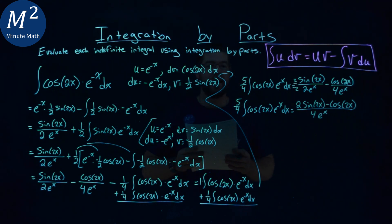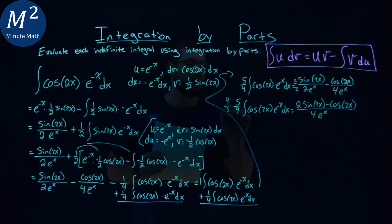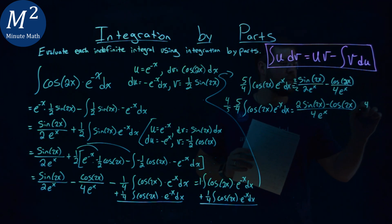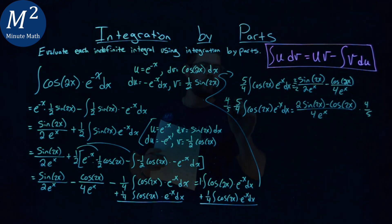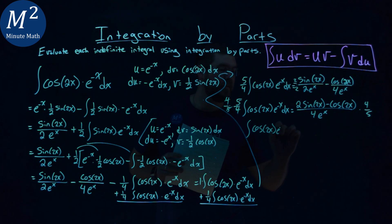But I want to get this original integral by itself. So, just multiplying both sides by four-fifths to both sides. And that's why I combined them to be one fraction at this point. So the 4's cancel, 5's cancel.